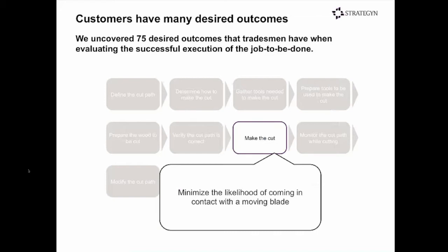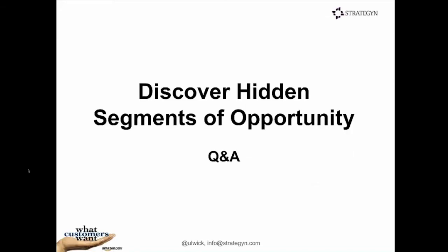We'll now take a few questions from the audience. First question: do you ever segment around anything other than desired outcomes? The answer is generally no. The whole goal is to figure out whether there are segments of customers with different unmet needs, so we focus on desired outcomes. Sometimes we throw in consumption chain outcomes as part of segmentation, but 99% of the time we're focused on outcomes related to the core job.